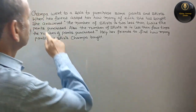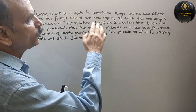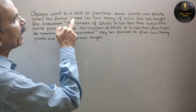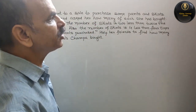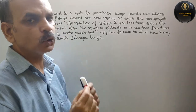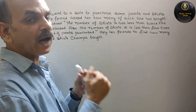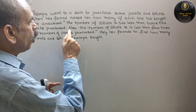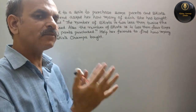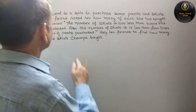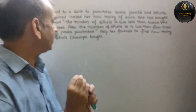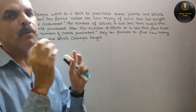Your question is: Champa went to a sale to purchase some pants and skirts. When her friend asked her how many of each she has bought, she answered — the number of skirts is 2 less than twice the number of pants. Also, the number of skirts is 4 less than 4 times the number of pants purchased. Help her friend to find how many pants and skirts Champa bought.